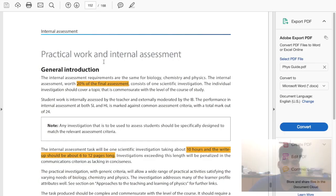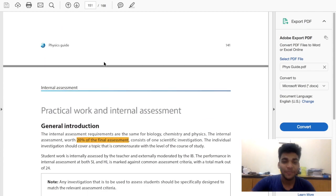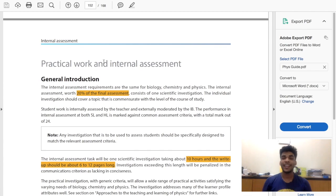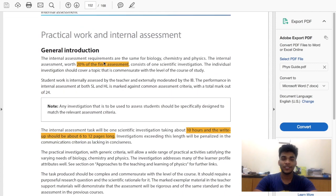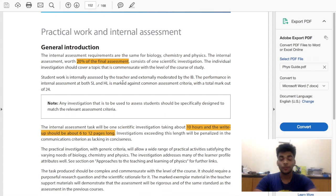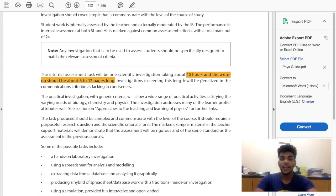It's really important that whenever you're doing your IA, you open your syllabus so that you can know exactly what to do. I have highlighted some points here. Your IA is 20% of the final assessment, it should be taking about 10 hours, and it should be 6 to 12 pages long.